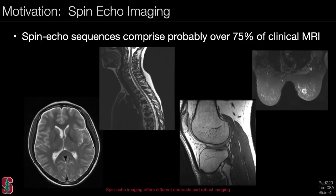The motivation for this lecture is that spin echo imaging is the most commonly used method in MRI today. Spin echo sequences offer multiple contrasts and robust imaging, as we will show.